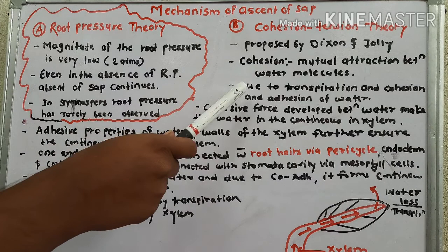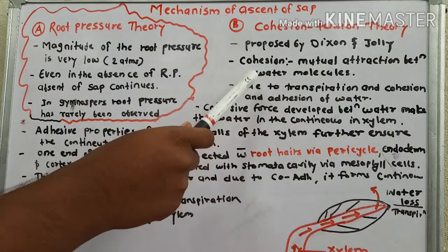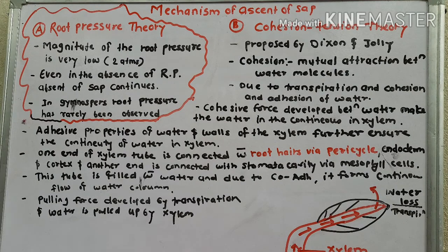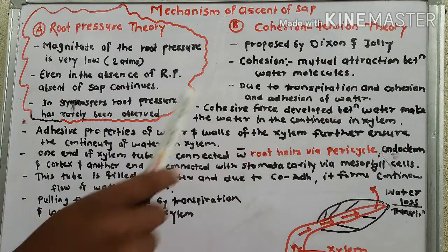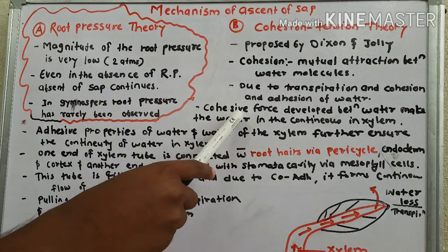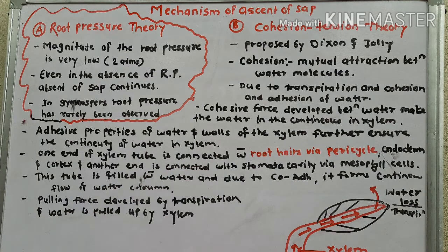The second theory is cohesion-tension theory, given by Dixon and Jolly. Cohesion means the mutual attraction between water molecules. This theory is completely dependent on cohesion and transpiration. The cohesion force developed between water molecules keeps the water in a continuous column in the xylem.